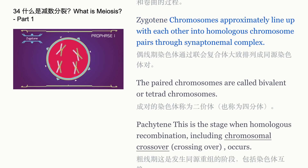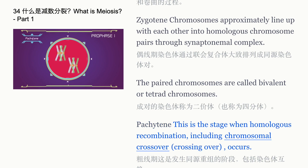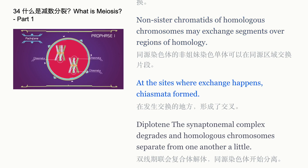Zygotene: chromosomes approximately line up with each other into homologous chromosome pairs through the synaptonemal complex. The paired chromosomes are called bivalent or tetrad chromosomes. Pachytene: this is the stage when homologous recombination, including chromosomal crossover, occurs. Non-sister chromatids of homologous chromosomes may exchange segments over regions of homology, and at the sites where exchange happens, chiasmata form.